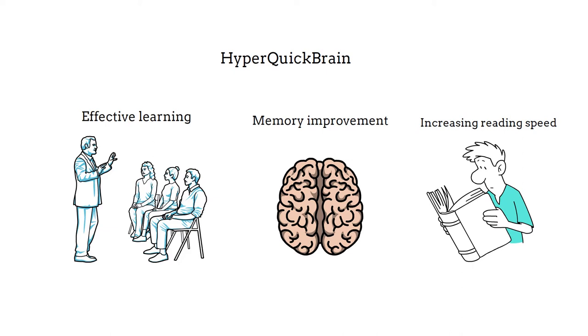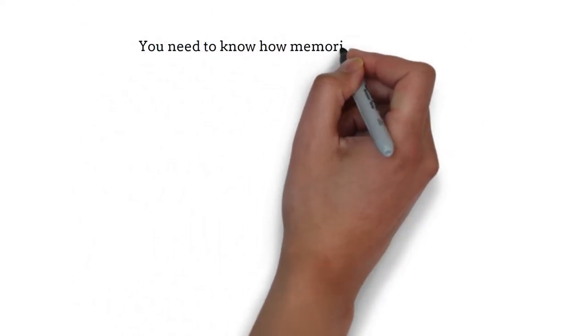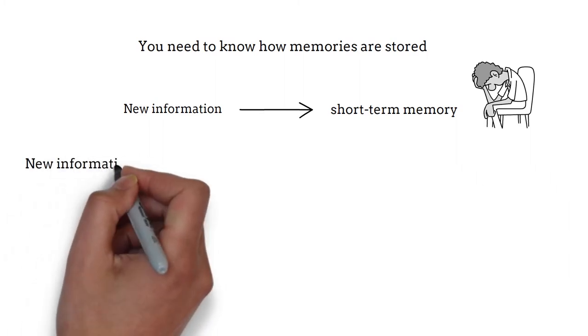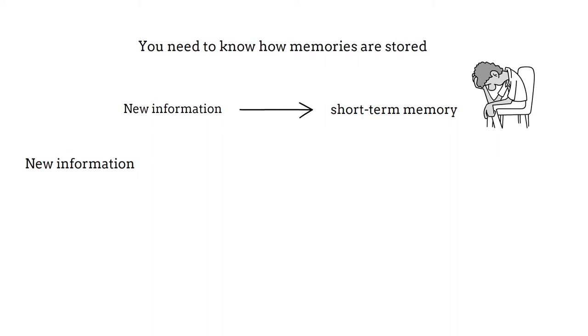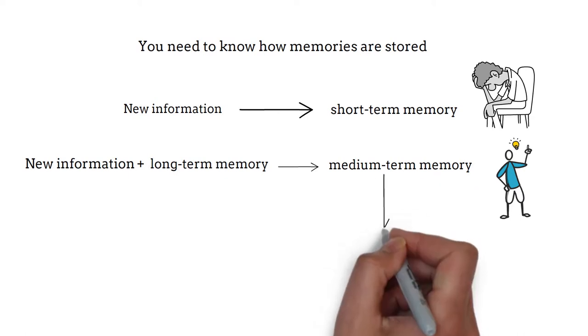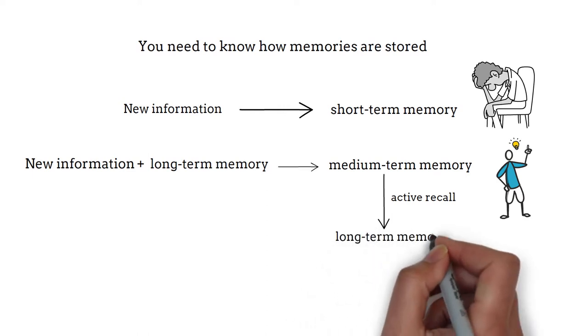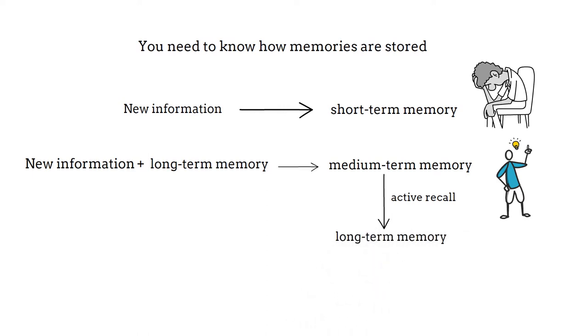To understand this concept, you need to know how memories are stored. If you are learning anything new, that information is moved to the short-term memory. That means you will forget it pretty quickly. If you combine new information with something already in your long-term memory, that information will be moved to the medium-term memory. That means you will be able to recall it for a longer period of time. If you perform an active recall of the medium-term memory, that information will be moved to the long-term memory, where it will be stored permanently.